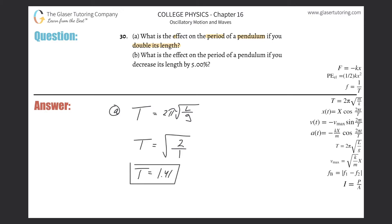And if it asks for triple or half, you would do the same procedure — just plug in the value of 3, or for half, plug in one-half, and then take the square root. So that takes care of letter A. Then letter B asks: what is the effect on the period of a pendulum if you decrease its length by 5%?